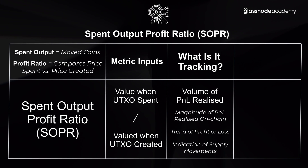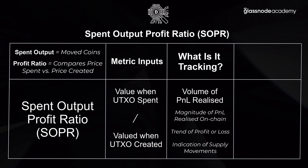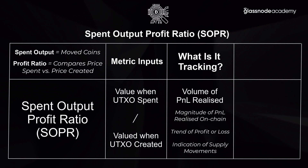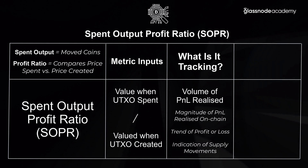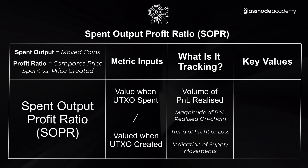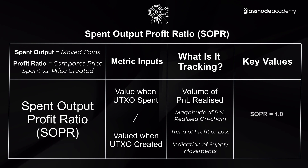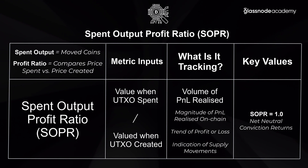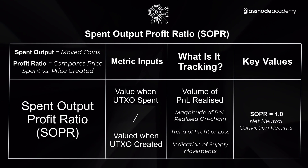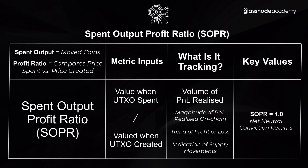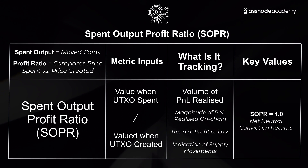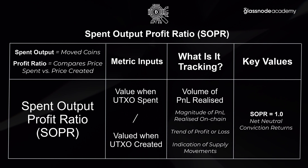Or are we seeing an overall market capitulation and panic selling as people sell their coins at a loss? Some key values for SOPR: when SOPR is equal to 1, it means the market overall is net neutral. This can mean that profits realized largely offset the losses, but it can also mean that conviction is returned — for example, in a bullish pullback.